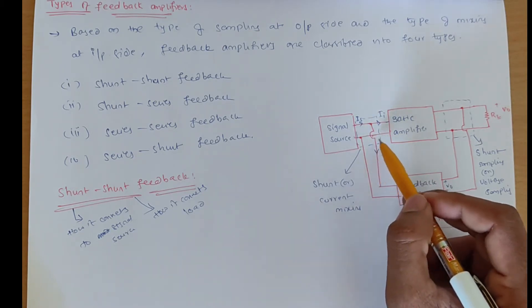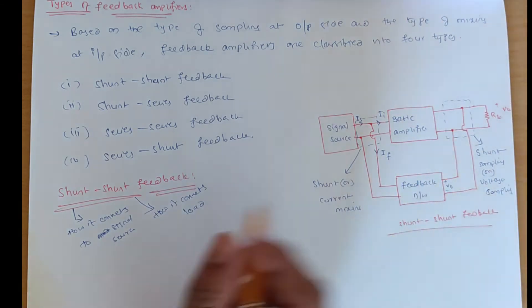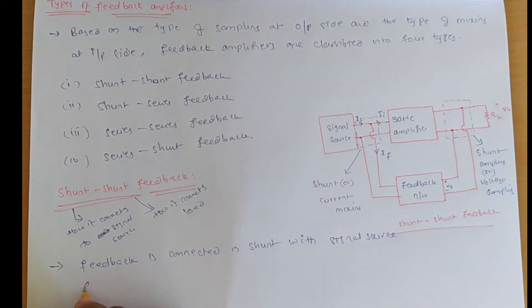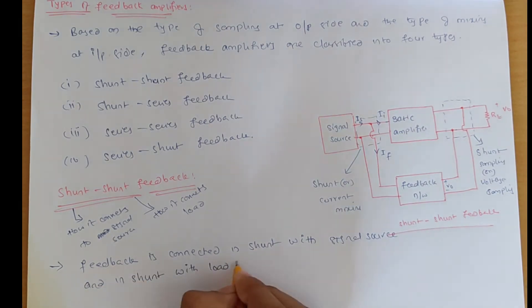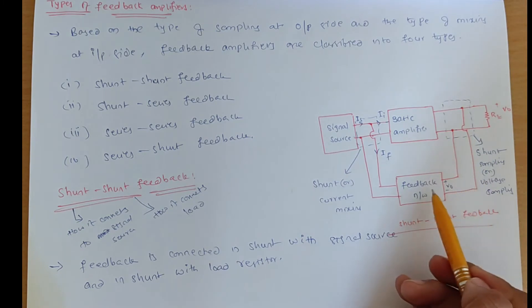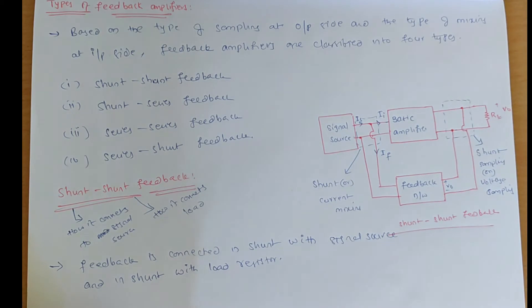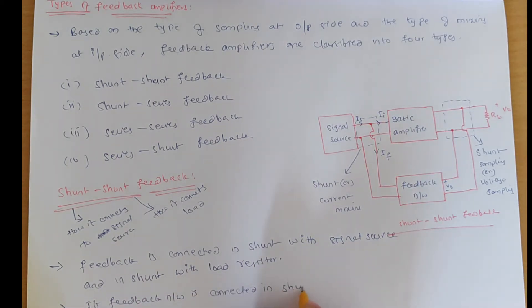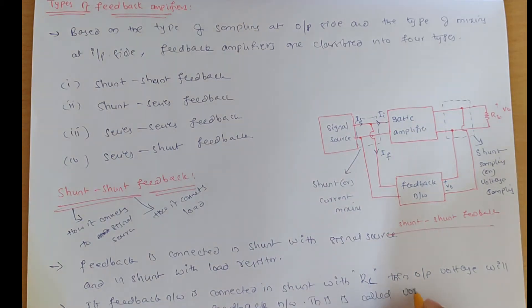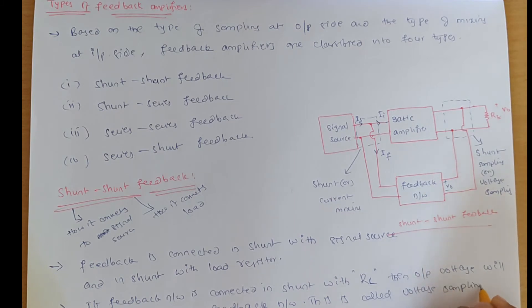The connection at the signal source is shunt mixing, also called current mixing. We can write: this feedback is connected in shunt with the signal source and in shunt with the load resistor. If the feedback network is connected in shunt with the load resistor RL, then the output voltage appears as input to the feedback network. This kind of sampling is called voltage sampling or shunt sampling.